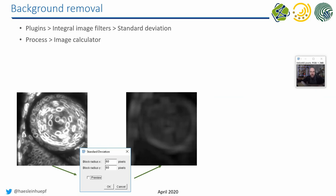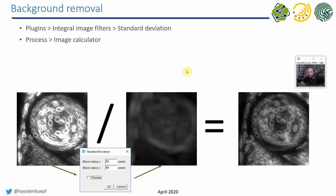You can deal with this by applying Subtract Background with different radii. Furthermore, an alternative way of removing background would be to take the original image, apply a standard deviation filter to it, and then divide one image by the other. As you can see, the signal intensities become more evenly distributed across different regions compared to the original image. Depending on what you want to do afterwards, either background subtraction or background division may make more sense.